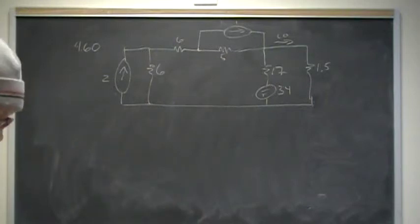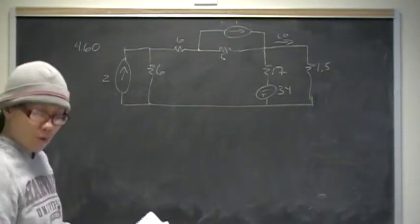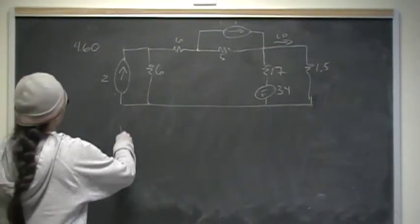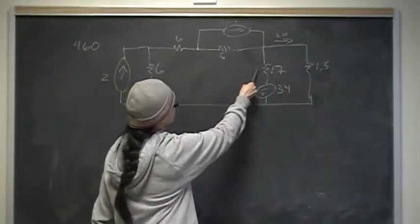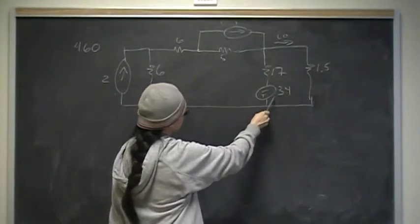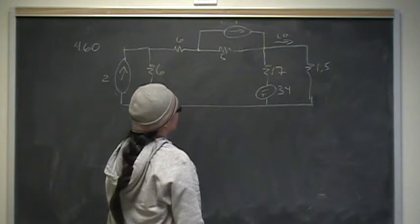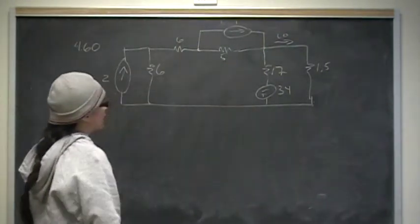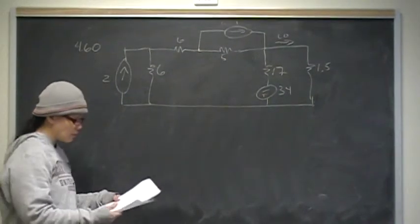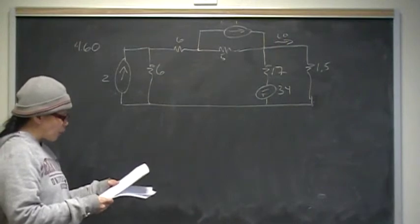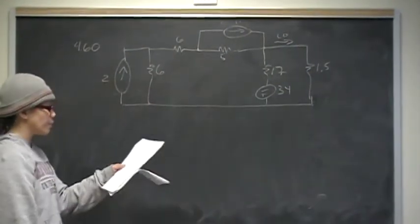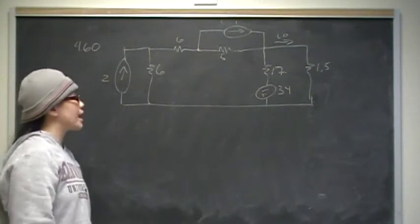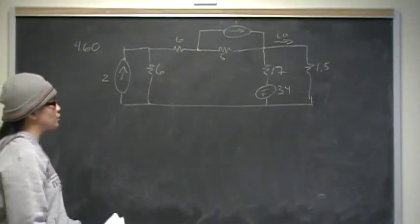This is problem 60 from chapter 4, from the section on source transformations. In this problem we have a circuit with a 2-amp independent current source connected in parallel with a 6-ohm resistor, connected in series with a 34-volt independent voltage source, and a 5-ohm resistor connected in parallel with a 1-amp independent current source. For part A, we use source transformations to find the current through the 1.5-ohm resistor. For part B, we verify that answer using mesh currents.